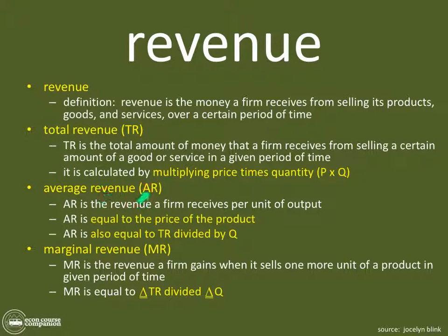Average revenue, or AR, is the revenue a firm receives per unit of output. AR is always equal to the price of the product. You can calculate average revenue by dividing total revenue by quantity, since revenue is always figured out per unit of quantity. Average revenue is always going to equal the price, no matter the market structure — whether we're looking at perfect competition, monopoly, monopolistic competition, or oligopoly. Average revenue is always the price that the firm gets in the marketplace. Remember that — it's super important.